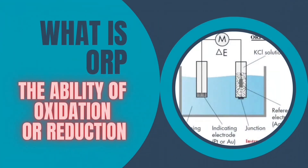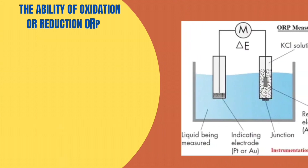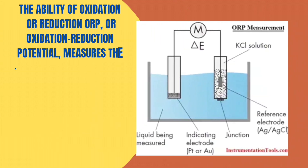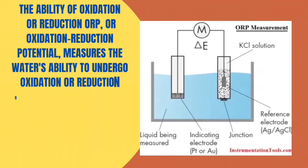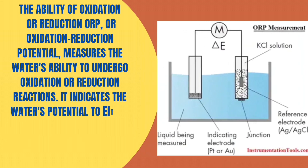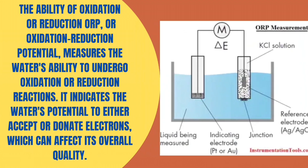What is ORP? ORP, or oxidation reduction potential, measures the water's ability to undergo oxidation or reduction reactions. It indicates the water's potential to either accept or donate electrons, which can affect its overall quality.